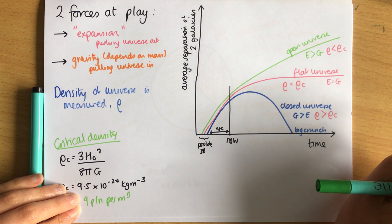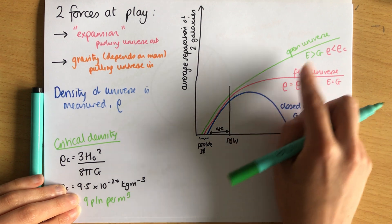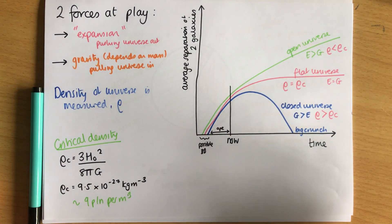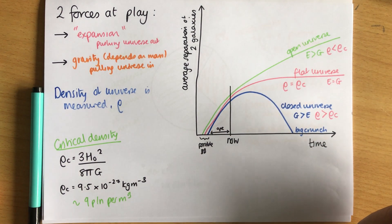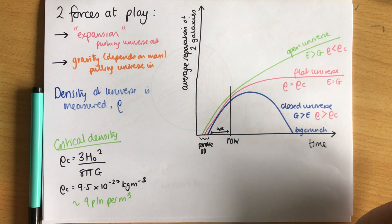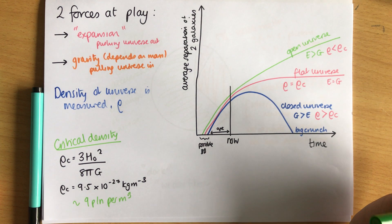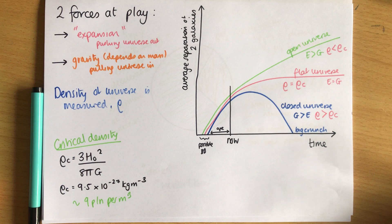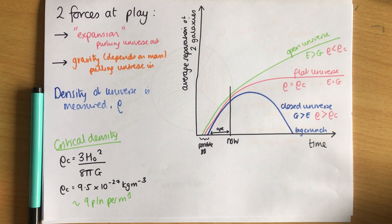That's why it's so difficult to know what's going to happen: we need a better value of H₀ to refine the critical density, and we need to measure the actual density and compare it to ρ_c - but dark matter makes that very hard. We have a reasonable idea of the age of the universe - around 14 billion years - but we're much less sure about what's going to happen in the future.